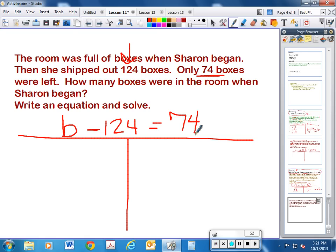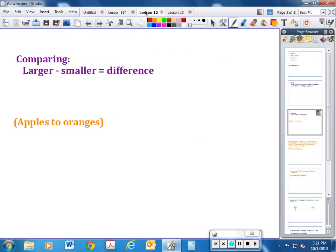All right. Now let's go to problems that are about comparing things. So here, this should go in your notes: Comparing is larger of something minus the smaller of something else equals the difference. And I always say comparing problems are apples to oranges—you are comparing two different things. It's not one group and part of them leaves, that's a separating pattern. This is comparing two different things. Let's look at an example of that.